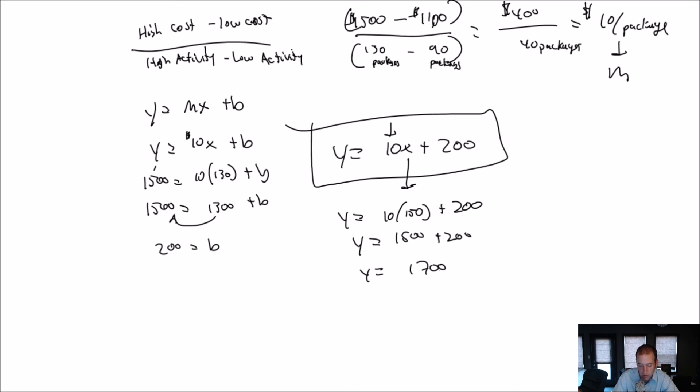Y equals 1,700. So if I'm planning for next month, this is a good planning tool, right? I can say, oh, next month, I think I'm going to ship about 150 packages. Well, then I think my shipping cost is going to be $1,700. So that was the answer for part I.